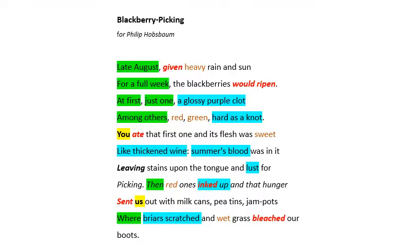If you look at the first section of the poem, there are a number of things we can look at in terms of the language. Those highlighted in green are adverbials: late August, for a full week, at first, among others, then. These words help structure the narrative in the past. They create the timeline and send us back to the moment in time with those temporal markers like late August and for a full week. Other words like where create a relative reference to a particular place in that moment — to that place where the briars are scratched.